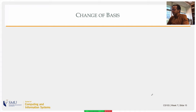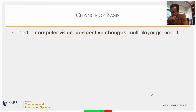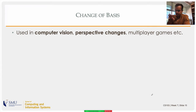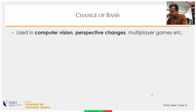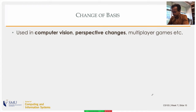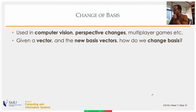Let's move on to change of basis. One motivation for this is in gaming — in multiplayer computer games, the same three-dimensional world in computer memory is viewed from different perspectives by different players. This change of perspective is fundamentally a change of basis, so knowing how to compute it is important.